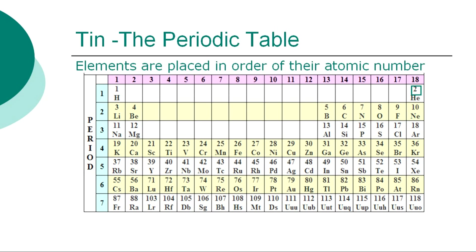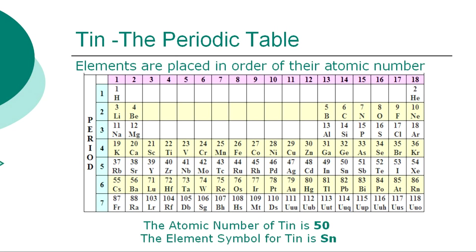The chemical elements of the periodic table are placed in order of their atomic numbers. Atomic numbers increase as you move across a row, called a group, or down a column, called a period. The atomic number of tin is 50, and the element symbol for tin is SN.